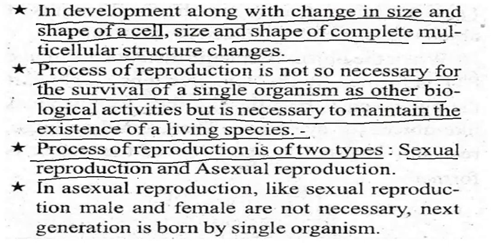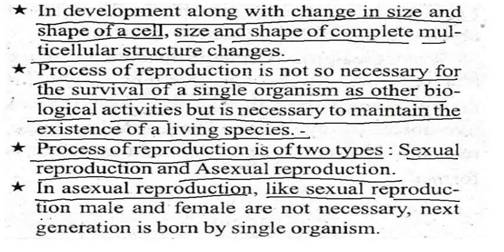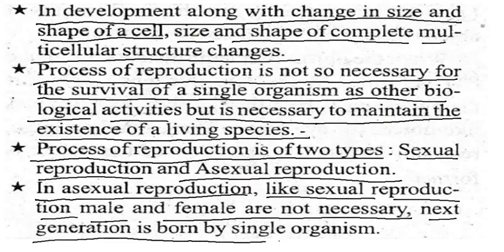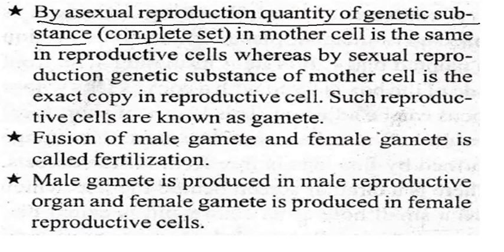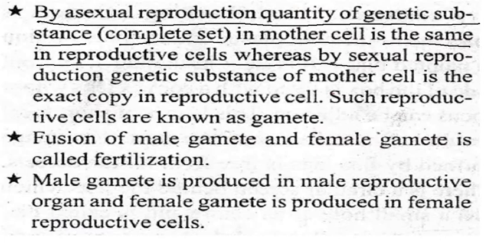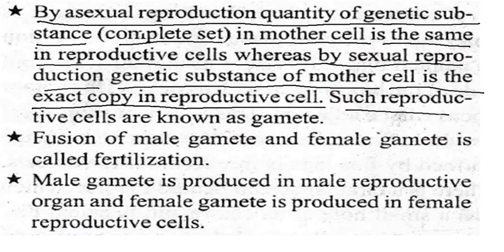In asexual reproduction, unlike sexual reproduction, male and female are not necessary. The new generation is born by a single organism. In bisexual reproduction, the quantity of genetic substance — the complete set in the mother cell — is the same in the reproductive cell, whereas in bisexual reproduction, genetic substance of the mother cell is the exact copy in the reproductive cell. Such reproductive cells are known as gametes.